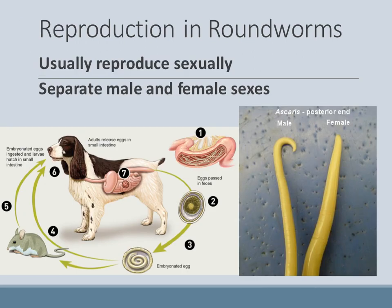Roundworms reproduce sexually primarily, and because of this they have separate female and male sexes — no more multiple sexes within one organism. Their life cycle typically requires a host and often an intermediate host species. For example, a dog poops out eggs, which are consumed again by the dog or another organism, and then the dog could eat that organism. There are usually multiple hosts involved in the life cycle of a parasite.